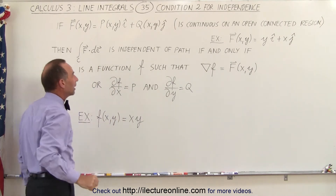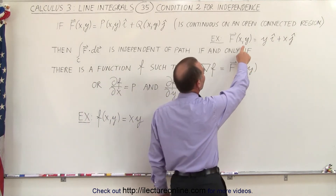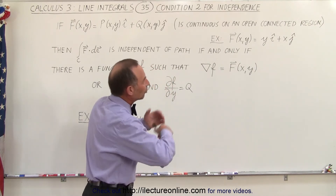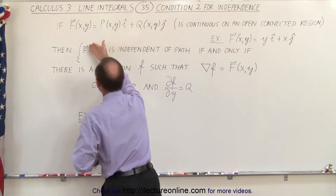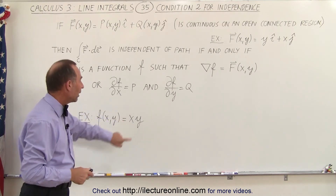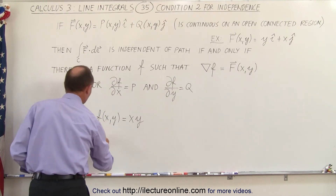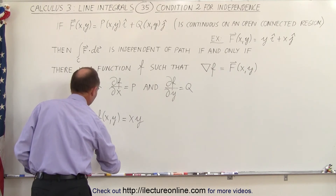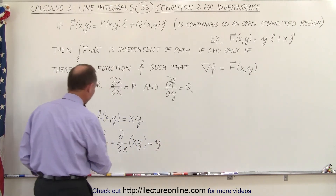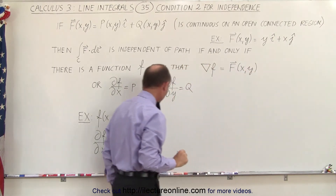To help make this clearer, here we have an example of a vector field we already verified in a previous video as giving a path-independent line integral. We find the potential function f — in this case f equals x times y. Taking the partial of f with respect to x gives us y, which matches the function P in our example.